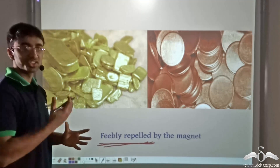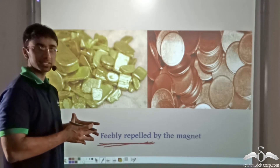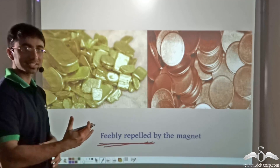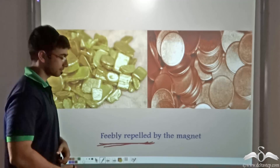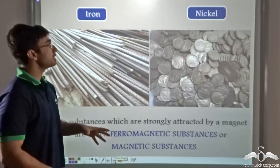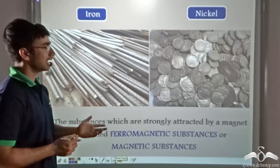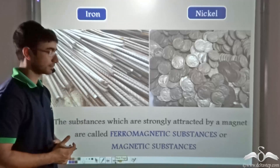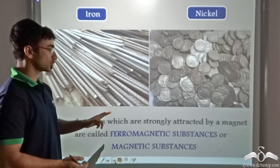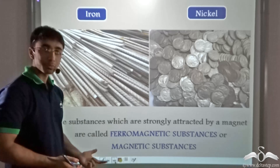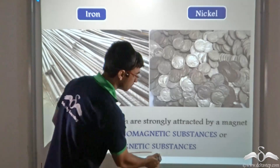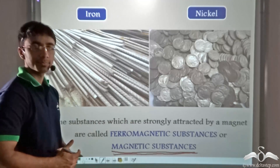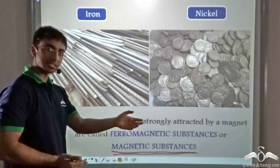So we found that there are three kinds of behavior a substance can exhibit when brought near a magnet, and based on this, substances can be classified into three broad categories. Iron, which were the nails, and nickel, contained in coins, are strongly attracted by magnets. Substances which are strongly attracted by a magnet are known as ferromagnetic substances, or simply magnetic substances.